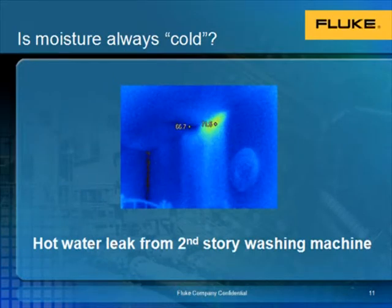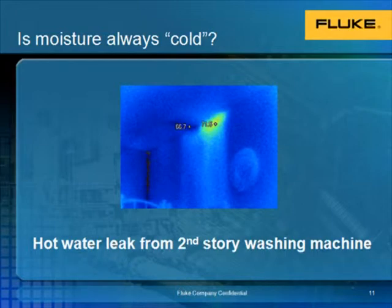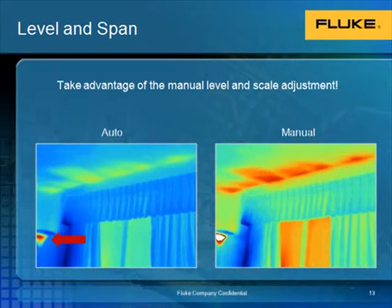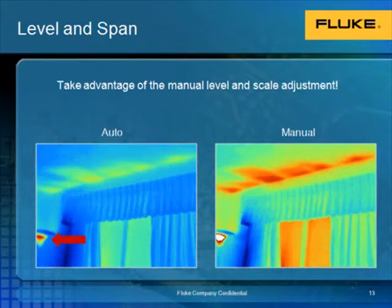Moisture on the interior of a building is not always cold, as you may think. Here we see a water leak from a second-story washing machine, which leads to a thermal signature that is actually warmer than the surrounding wall. The level and span are adjustments that can be made right on board a thermal imager. The span refers to the highest and lowest temperature found within the measurement area or field of view. On the left we see an imager set in auto mode. By setting the span manually, we can saturate out the extreme heat coming from a light and make a much more vivid picture.